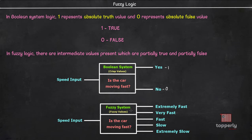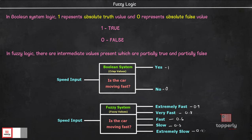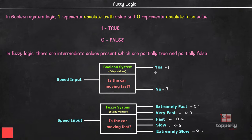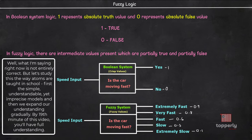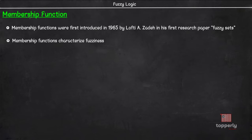In the case of Fuzzy Logic systems it is somewhat different. Since we are dealing with partially true and partially false values, we may have membership values like 0.9, 0.8, 0.6, 0.3, and 0.1. These values are assigned based on the degree of truth in the Fuzzy input with respect to the Fuzzy sets. Extremely fast is more close to absolute true, so it is assigned a value of 0.9, which is close to 1. Extremely slow is close to absolute false, so it is assigned a value of 0.1, which is close to 0. This is how Fuzzy Logic systems take up partial values, and for each partial output they will have a membership value assigned. Therefore, Fuzzy Logic systems are governed by membership functions.